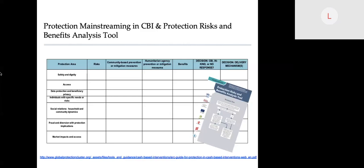The matrix takes you through different steps to identify which risks are apparent within those protection areas, the community-based prevention or mitigation measures that could be put in place, prevention or mitigation measures that can be put in place by humanitarian agencies, benefits, and then the decision as to whether to use CBI, in-kind assistance, or no response at all.